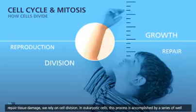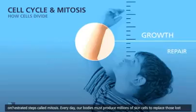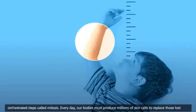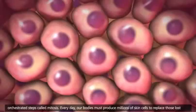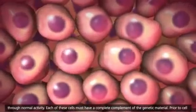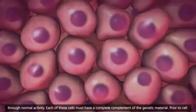In eukaryotic cells, this process is accomplished by a series of well-orchestrated steps called mitosis. Every day our bodies must produce millions of skin cells to replace those lost through normal activity. Each of these cells must have a complete complement of the genetic material.